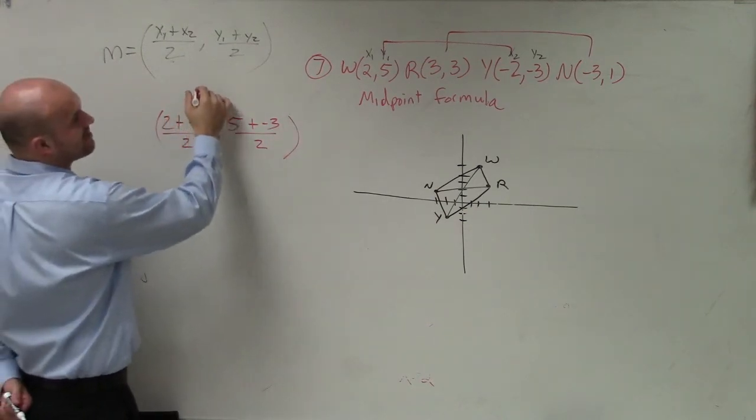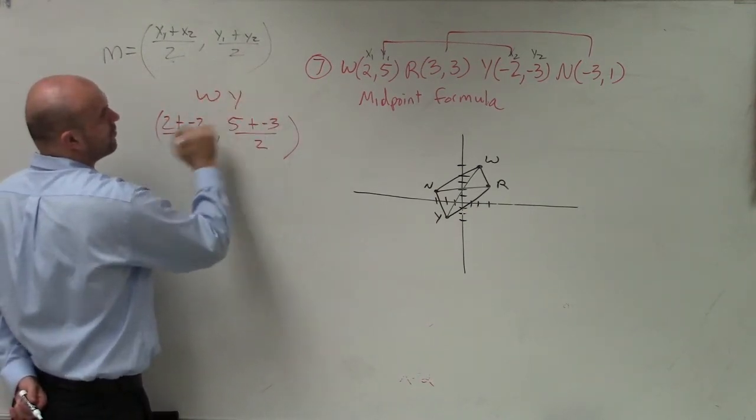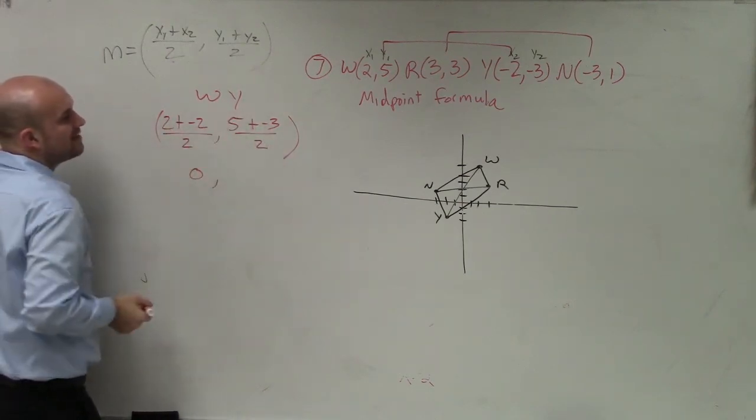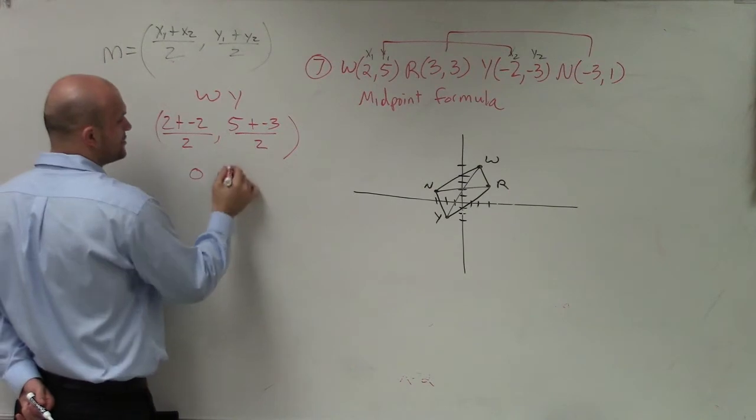And this is for the midpoint of WY. So 2 + -2 is 0, 0 / 2 is 0. 5 + -3 is 2, 2 / 2 is 1.